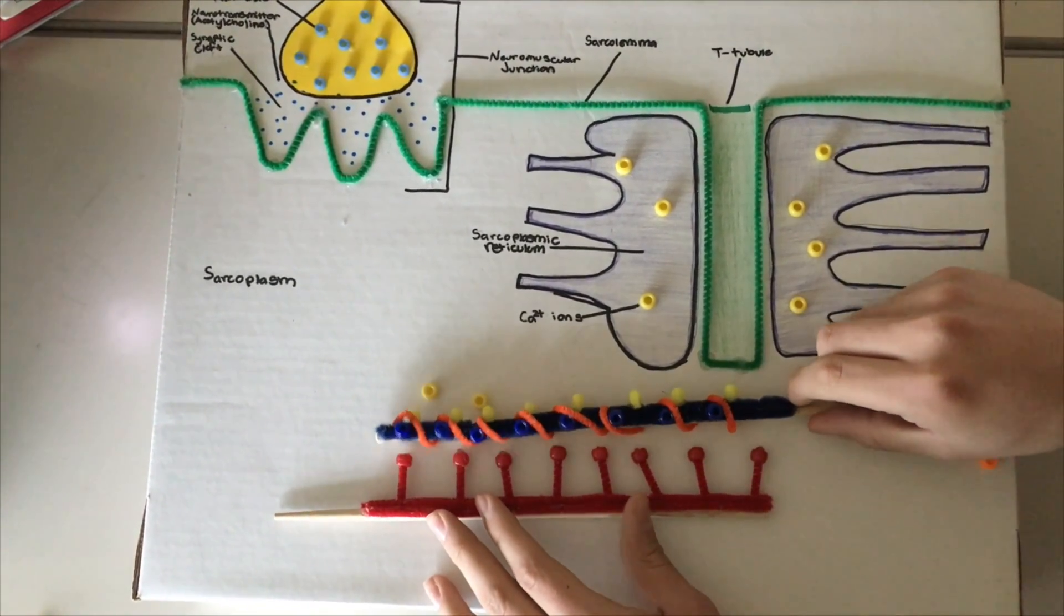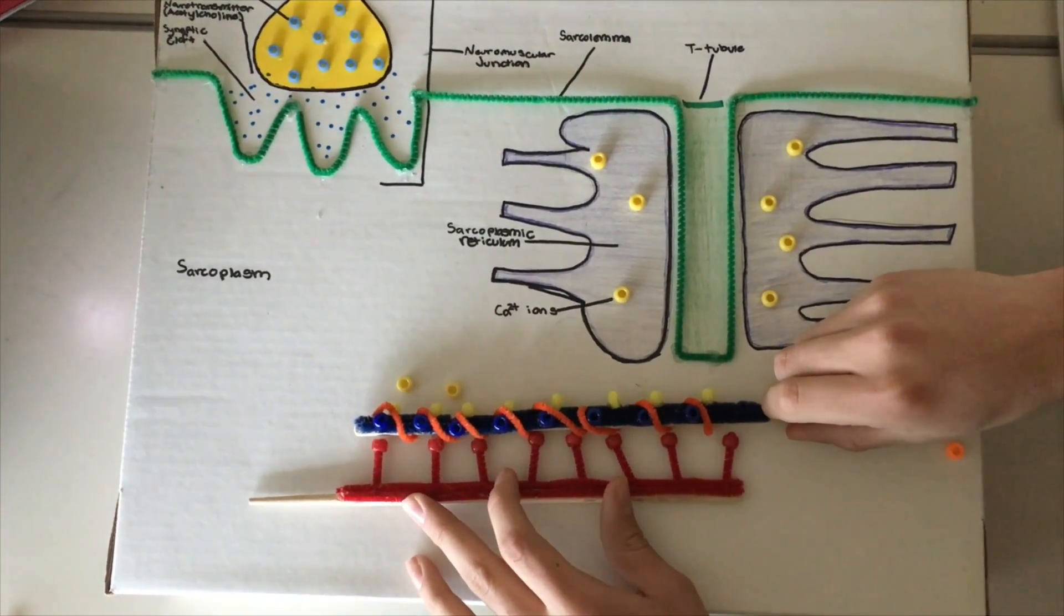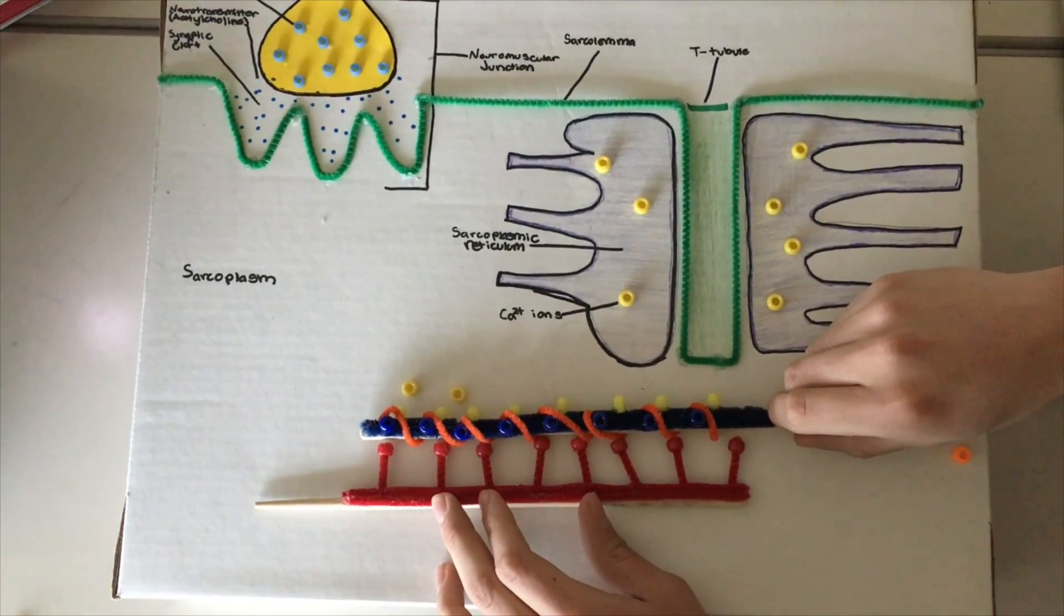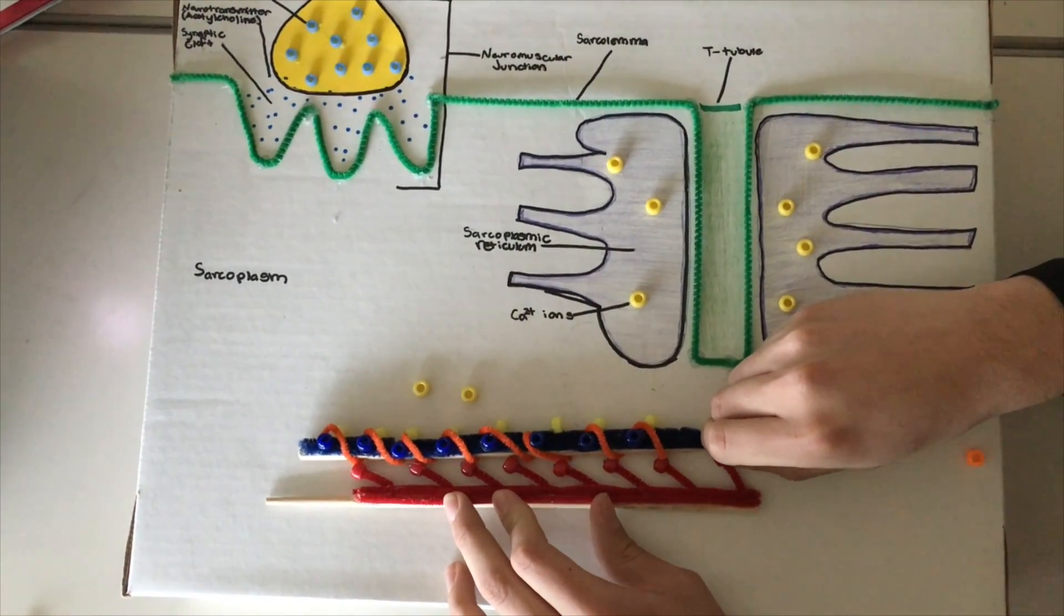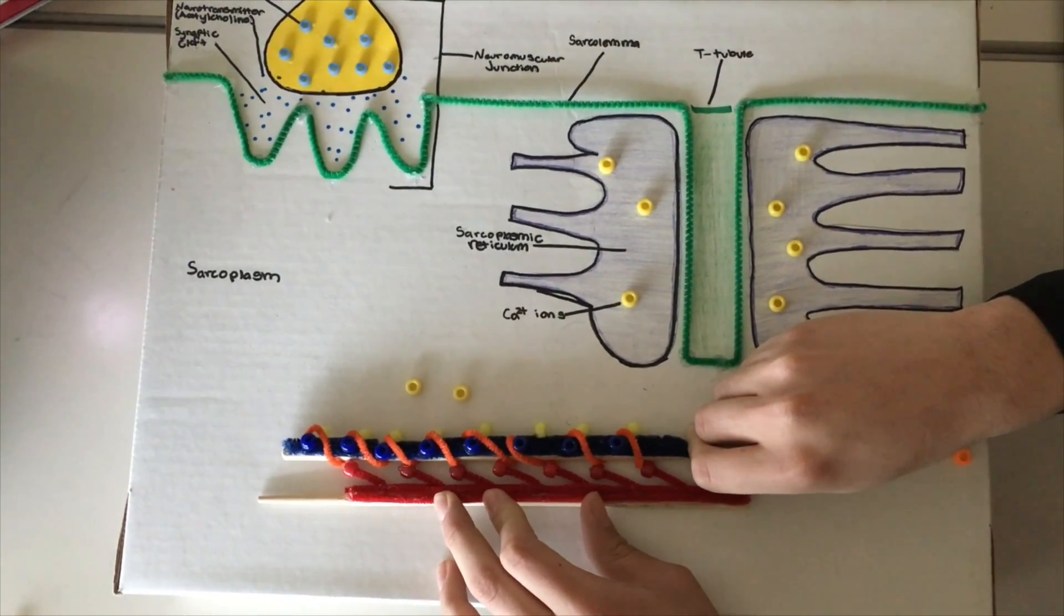The extended myosin head will then bind to an exposed active site on the actin, forming a crossbridge. The myosin head moves to a low energy state when the ADP and the phosphate are used up. Still attached to the actin, it causes a movement called a power stroke.